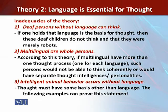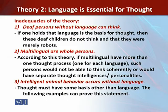Inadequacy number three states that intelligent animal behavior occurs without language, meaning thought must have some basis other than language. For example, monkeys without language can develop simple counting and arithmetic abilities. Insects also, without language, can think of strategies for gathering food, defending themselves, and finding mates. Since animals can think without language, there is no reason to believe that humans cannot do the same.